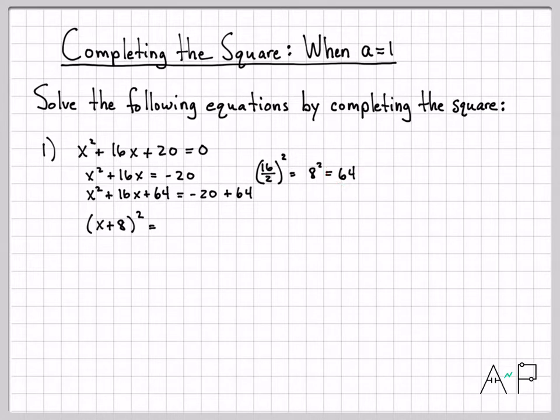On the right side, I have minus 20 plus 64. That is 44. And now I'm ready to do my next steps.